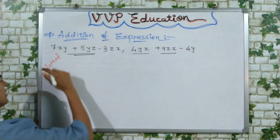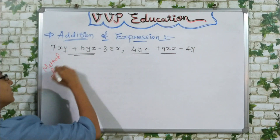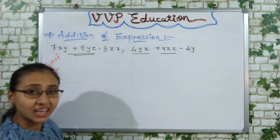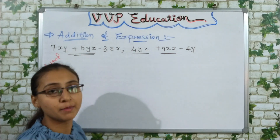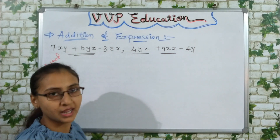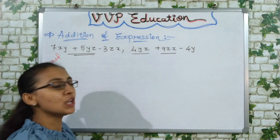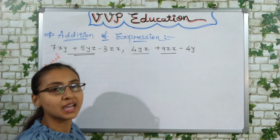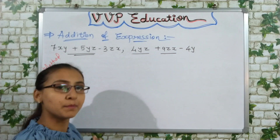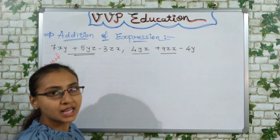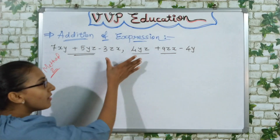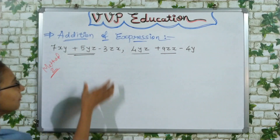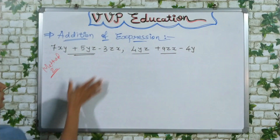Now the second method — this is our most preferable method, because we will use this maximum when we have bigger problems ahead. So this method is very important.